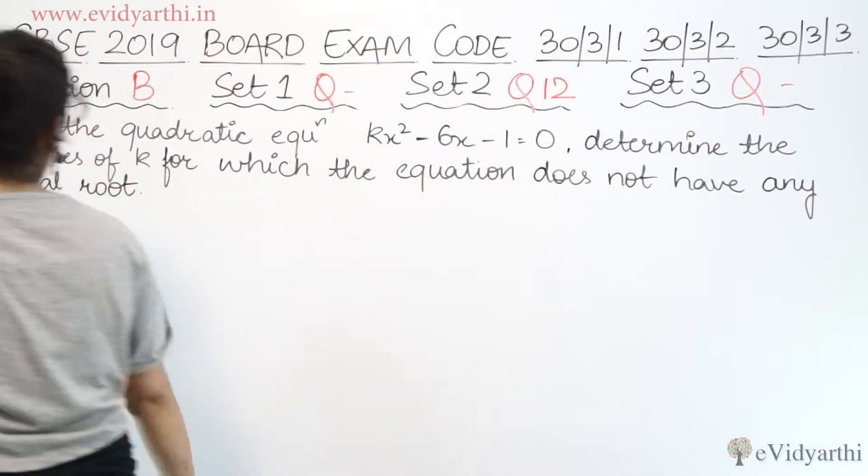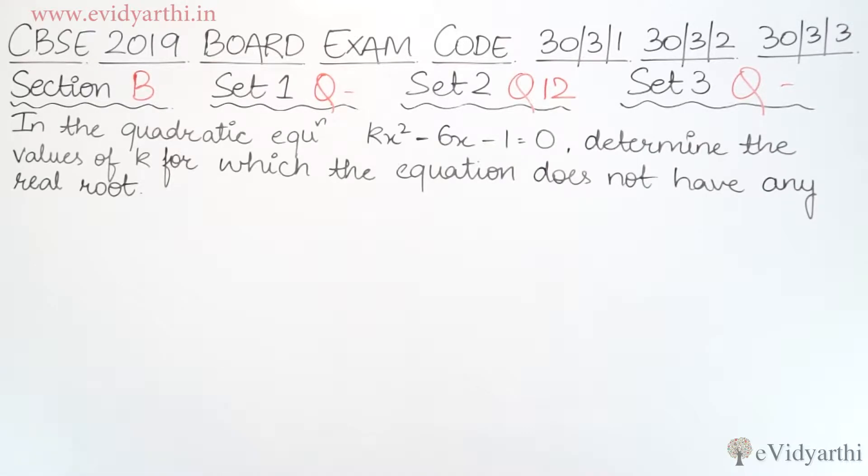The question says in the quadratic equation kx square minus 6x minus 1 equals to 0, determine the value of k for which the equation does not have any real root.